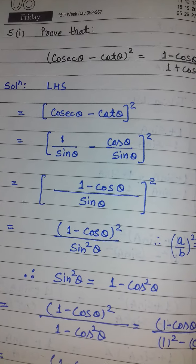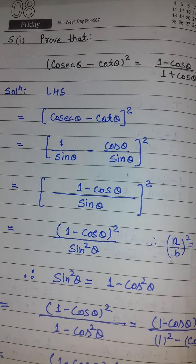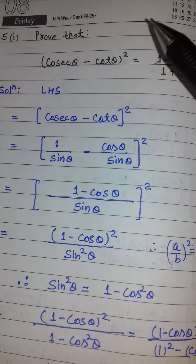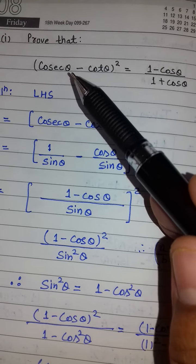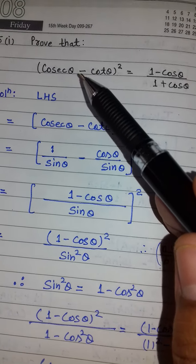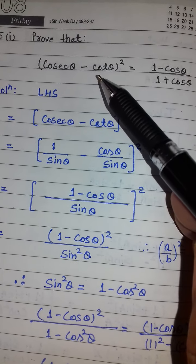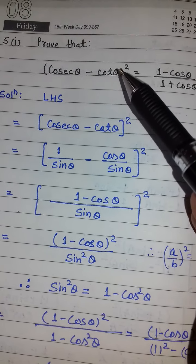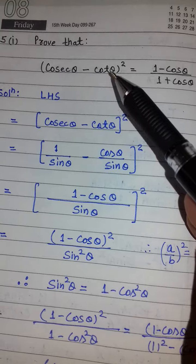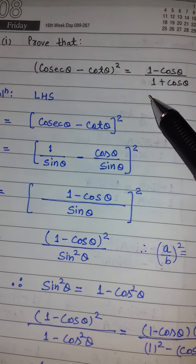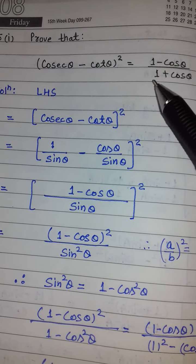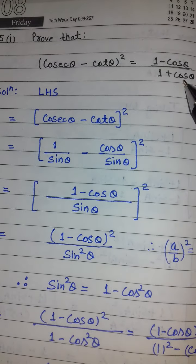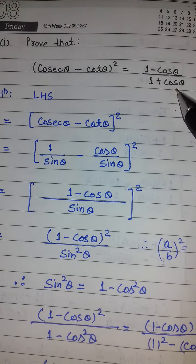The first part is to prove that (cosec θ − cot θ)² is equal to (1 − cos θ) upon (1 + cos θ).